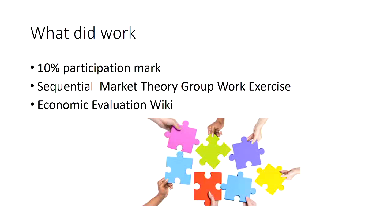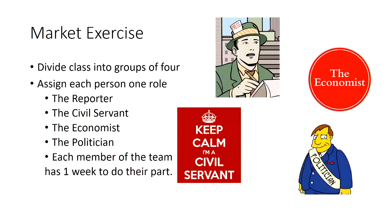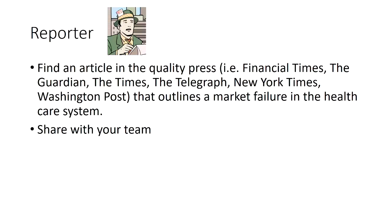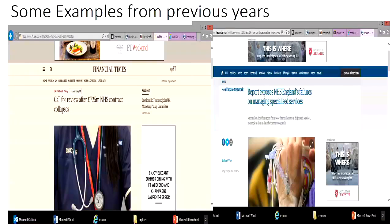One exercise I'll discuss is a market exercise, similar to one Carolyn described, but made into a group work exercise. These classes tend to be small — maximum 20 people — so everyone is divided into groups of four randomly through Blackboard. Each person is assigned one role: reporter, civil servant, economist, or politician. Each assignment lasts about four weeks. The reporter finds an article in the popular press that outlines a market failure in the healthcare system and shares it with the team.